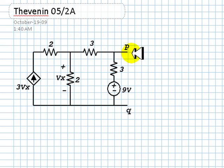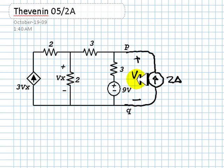And now the 2-Amp test. Connect instead a 2-Amp current source at the port and determine the voltage that appears, V2A.